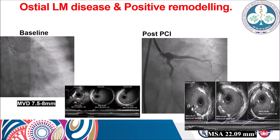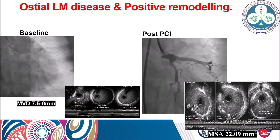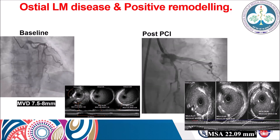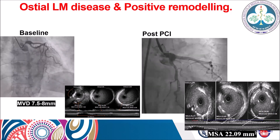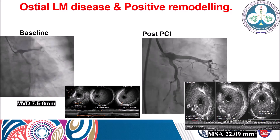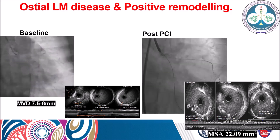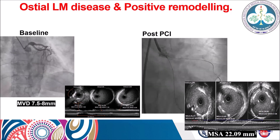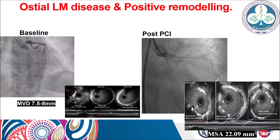In this case with ostial left main disease and positive remodeling, the left main size on intravascular imaging was 7.5 to 8 mm, which could not be managed without imaging guidance. A 5 mm stent was deployed across the ostium, followed by dilatation with a 6 mm balloon each across the LAD and LCX to achieve an optimal result. Post-stenting, the minimum stent area achieved across the left main ostium was 22 mm².